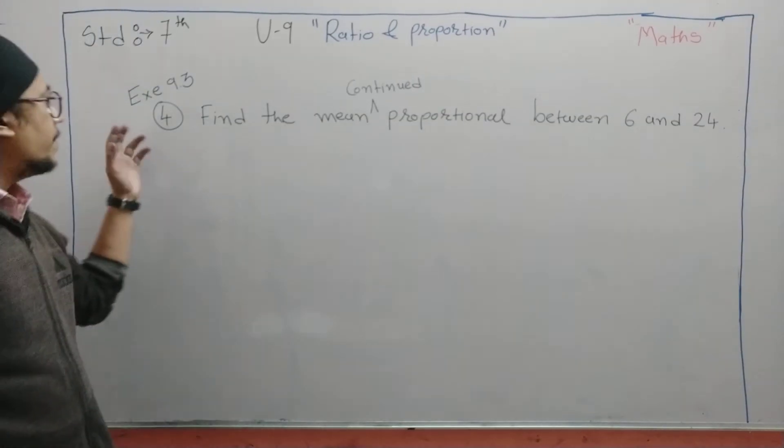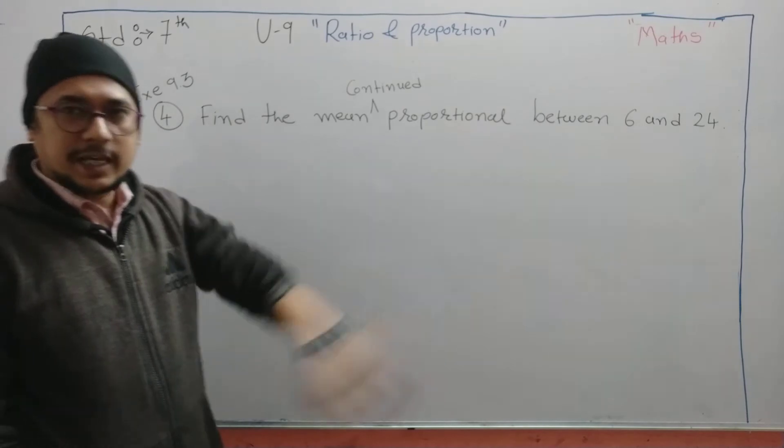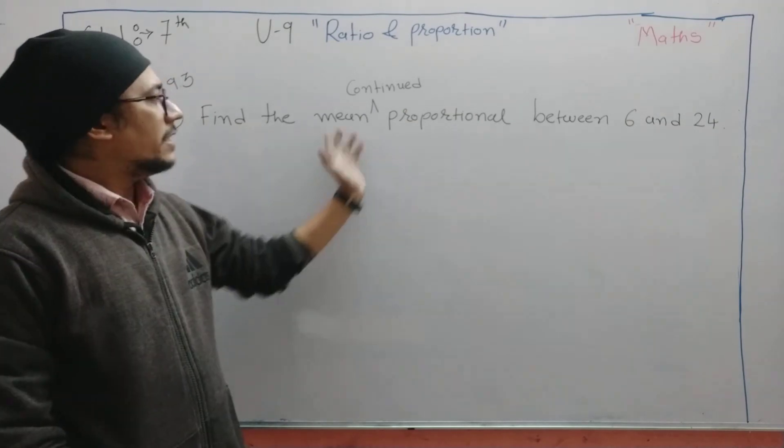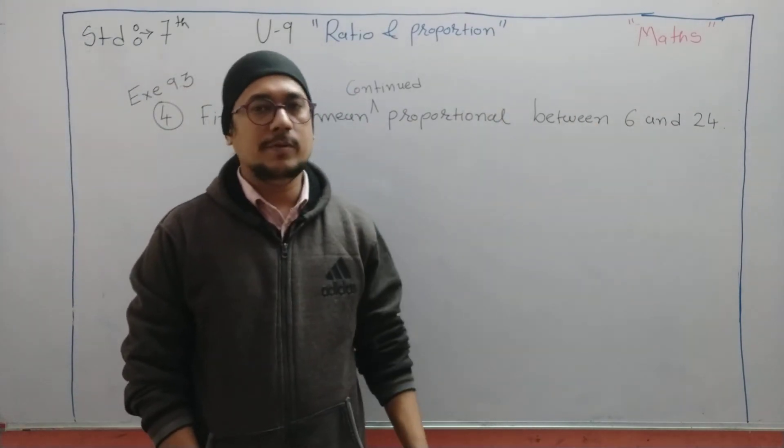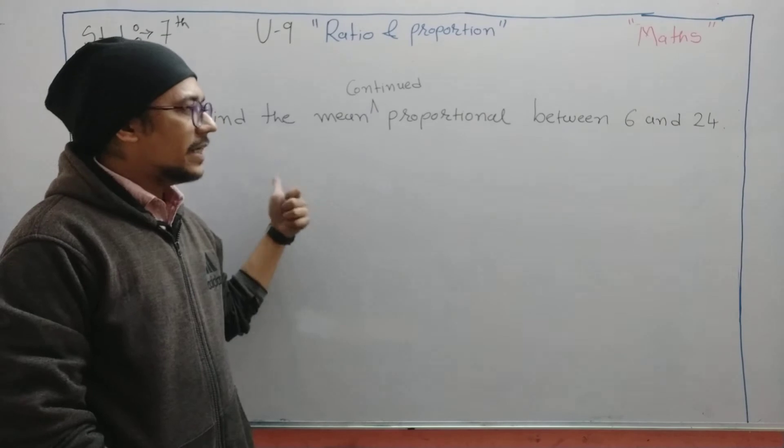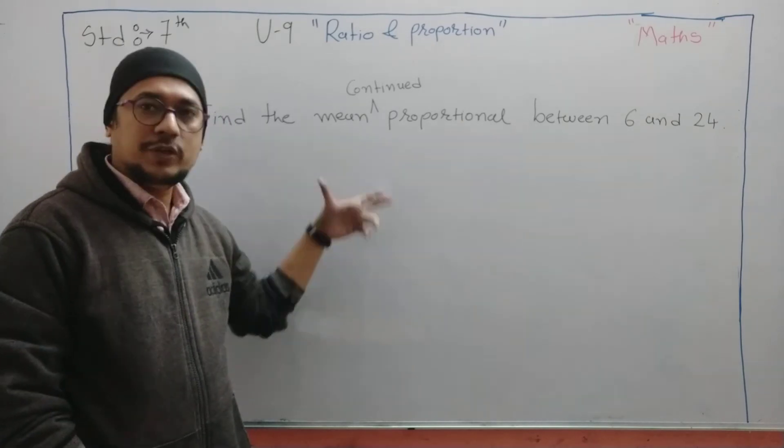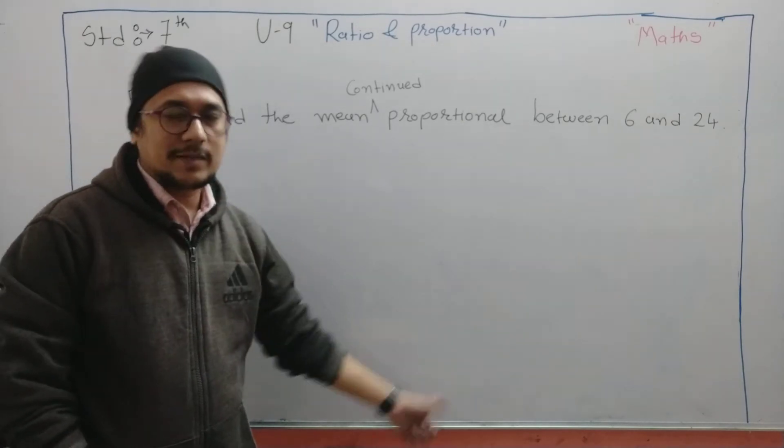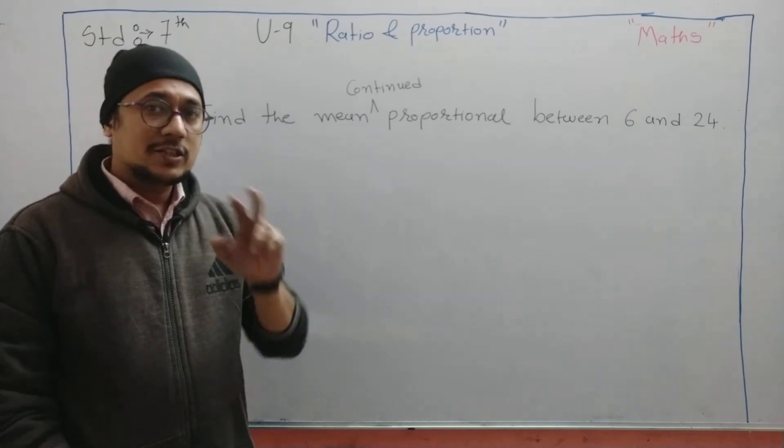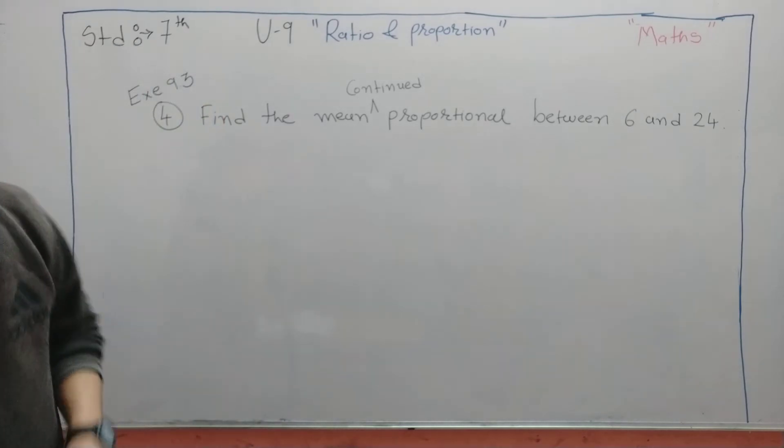It is from exercise 9.3, fourth problem. Find the mean proportion - you can also add continued. Find the mean continued proportion between 6 and 24. Similar kind of problem we faced. What we have to do: 6, x, x, 24. Then a is to b as b is to c. Do all these things with the formula, put down the values, then you will get x square as something. Then you have to do the factorization, make a pair, cancel the square, and then finally you will get x. So this problem will be homework for you.